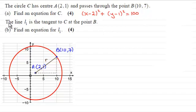And now we're told that the line L₁ is the tangent to C at the point B. And in part B, we've got to find an equation then for the line L₁ for four marks. So if you'd like to have a go at this and haven't done so already, as usual, I'll just give you a moment to pause the video.